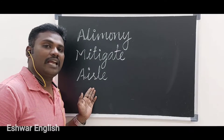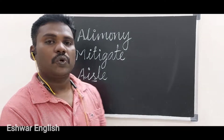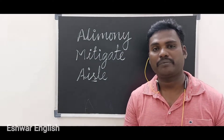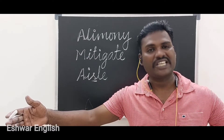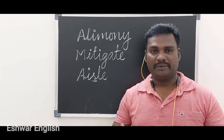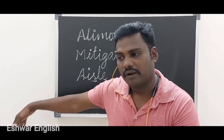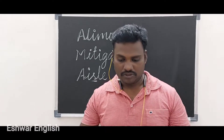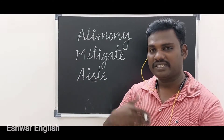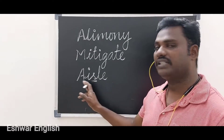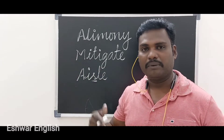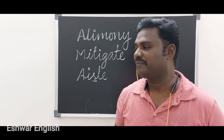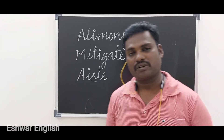The next word is 'aisle.' Note that the letter 'i' is silent here, so it is pronounced 'aisle.' If you visit a theater, stadium, or auditorium, there is a space between the rows of chairs or seats — that space is called an aisle. For example: 'My father is walking on the aisle in the theater.'